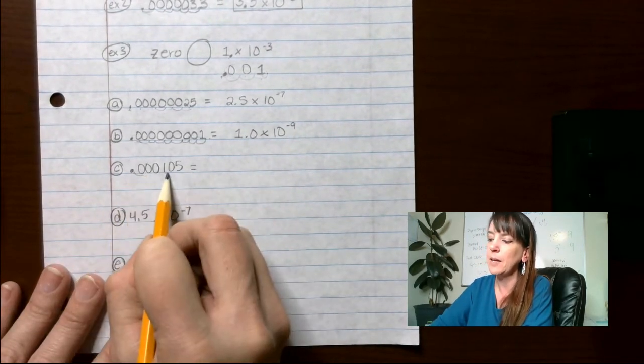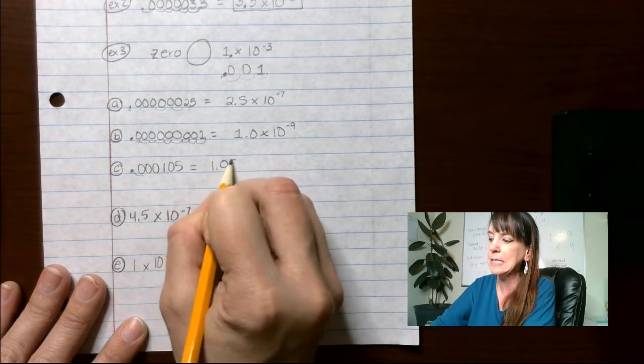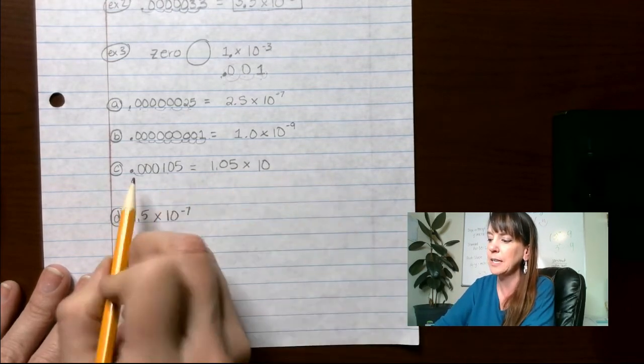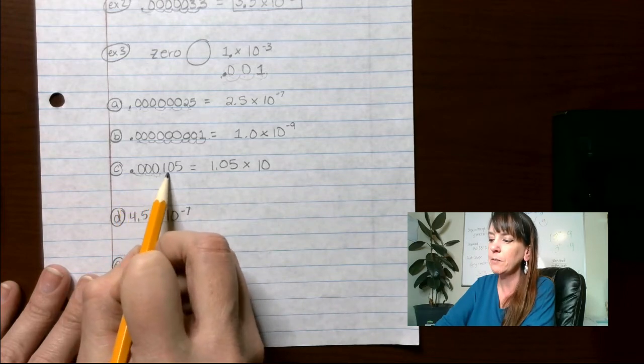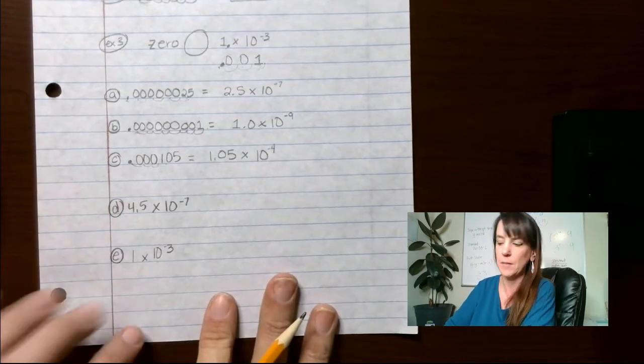All right. We're going to move this decimal right in between here. So it's going to be 1.05 times 10 to the 1, 2, 3, 4. Negative 4. Negative 4.